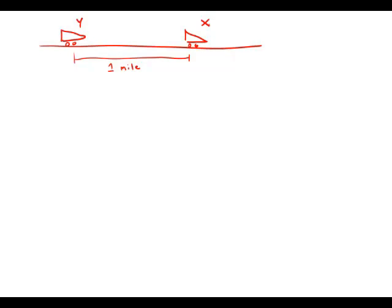While on a straight road, car X and car Y are traveling at different constant rates. If car X is now one mile ahead of car Y, how many minutes from now will car X be two miles ahead of car Y?